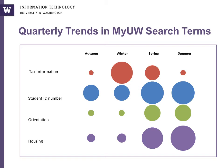Looking at the quarterly trends in MyUW search terms, we again see temporal trends and variation in frequency over the course of the academic year. The sizes of the circles are indicative of the number of times a term or closely related term was entered into the MyUW search field. Tax information, in red, is searched for most frequently in winter and spring quarters, the periods just before tax filings are due. Searches for orientation, in green, housing, in purple, and student ID number, in blue, all increase during the spring and summer quarters, likely corresponding to newly admitted students. These search data indicate some of the resources students need on MyUW and when, and can be used to identify which resources should be made more accessible, as well as when students need to find certain resources.